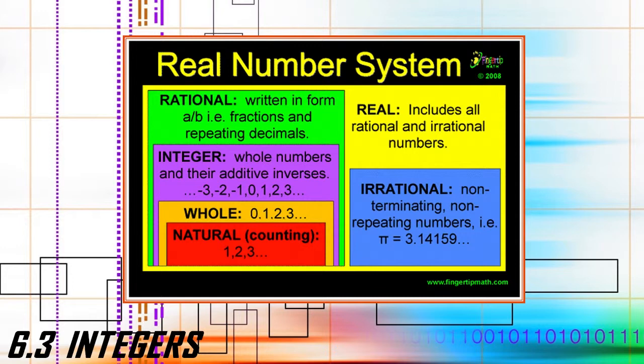First you learn to count from 1 to 10 — those are called natural or counting numbers. Then you learn about zero. When we add zero to the set of natural numbers, it is called whole numbers. Integers are whole numbers, their opposites, and zero.